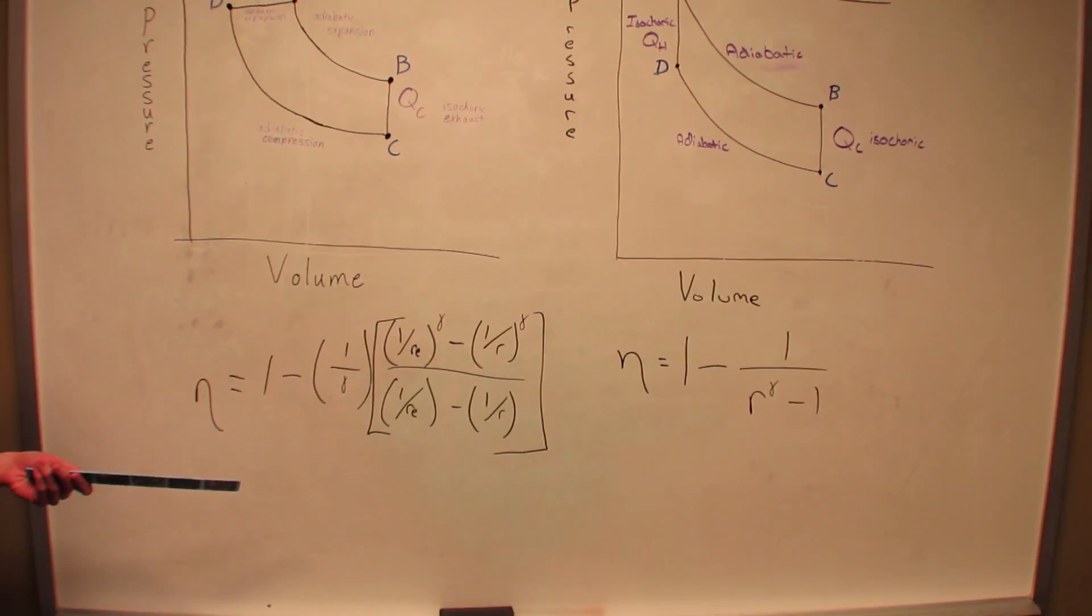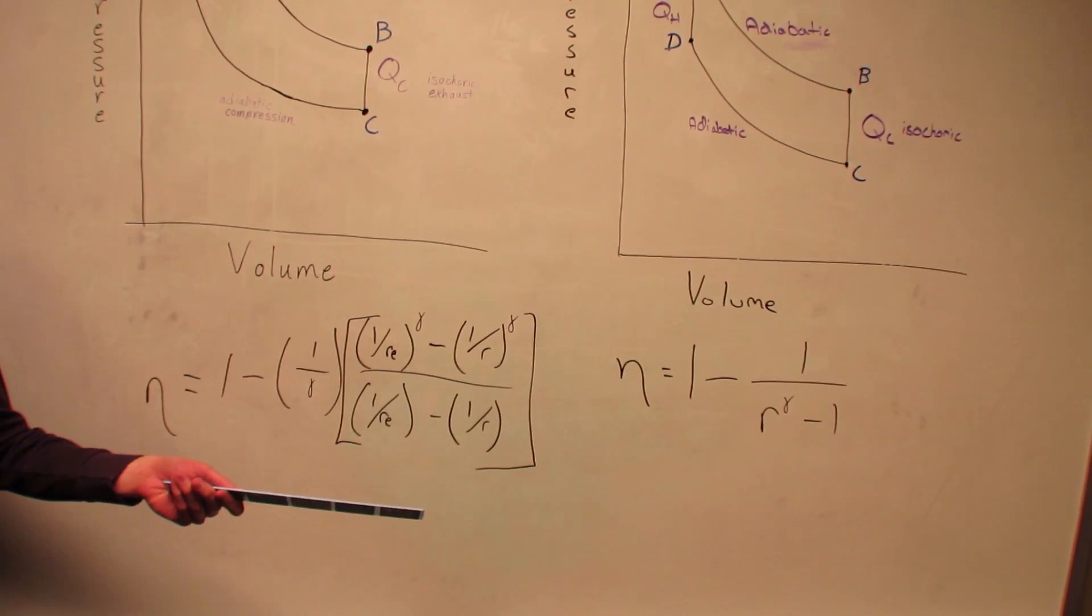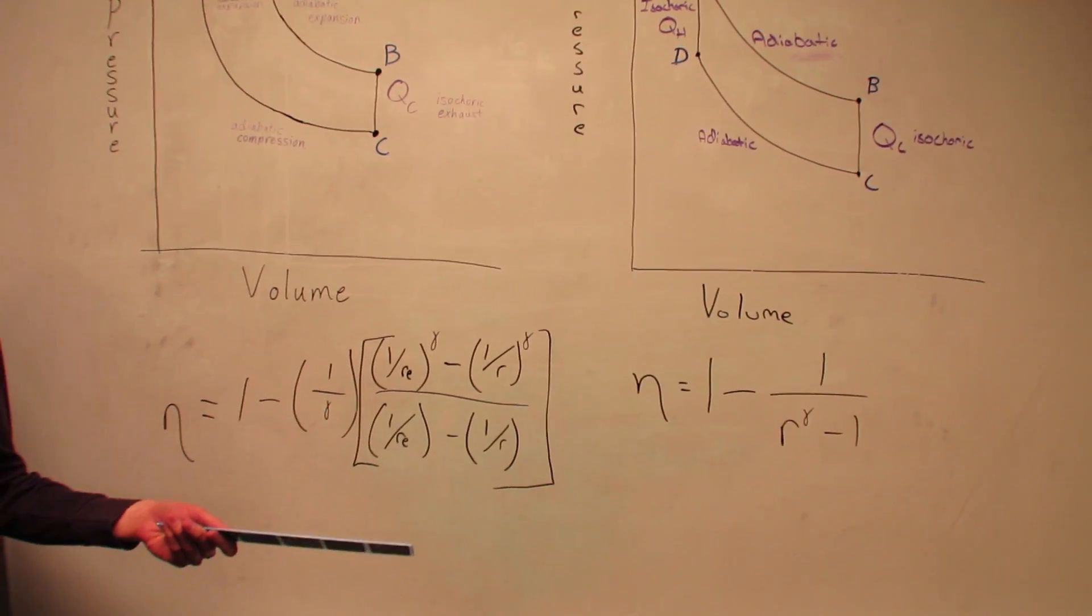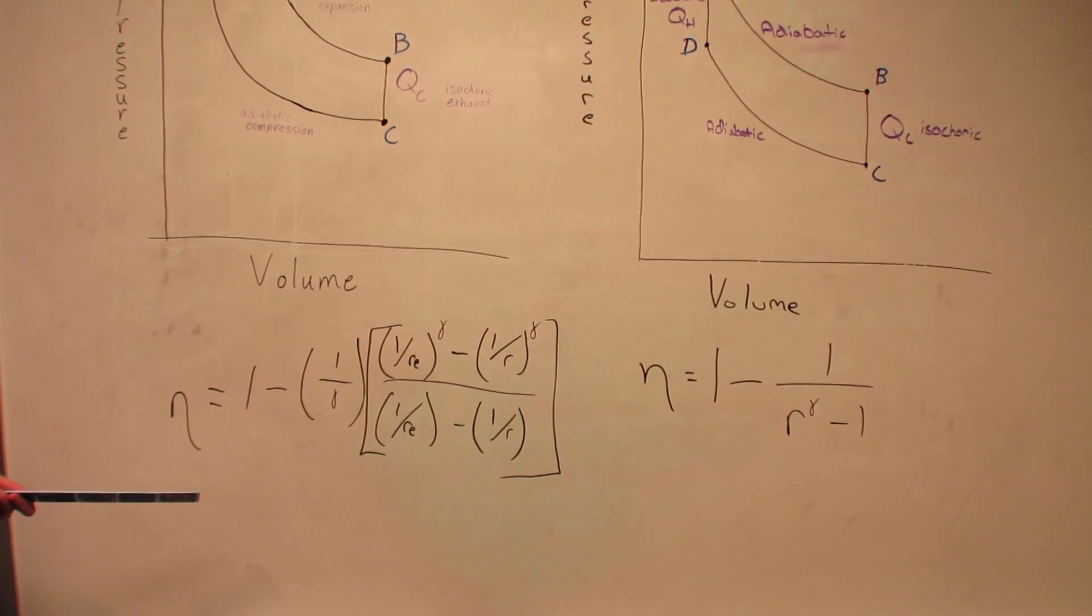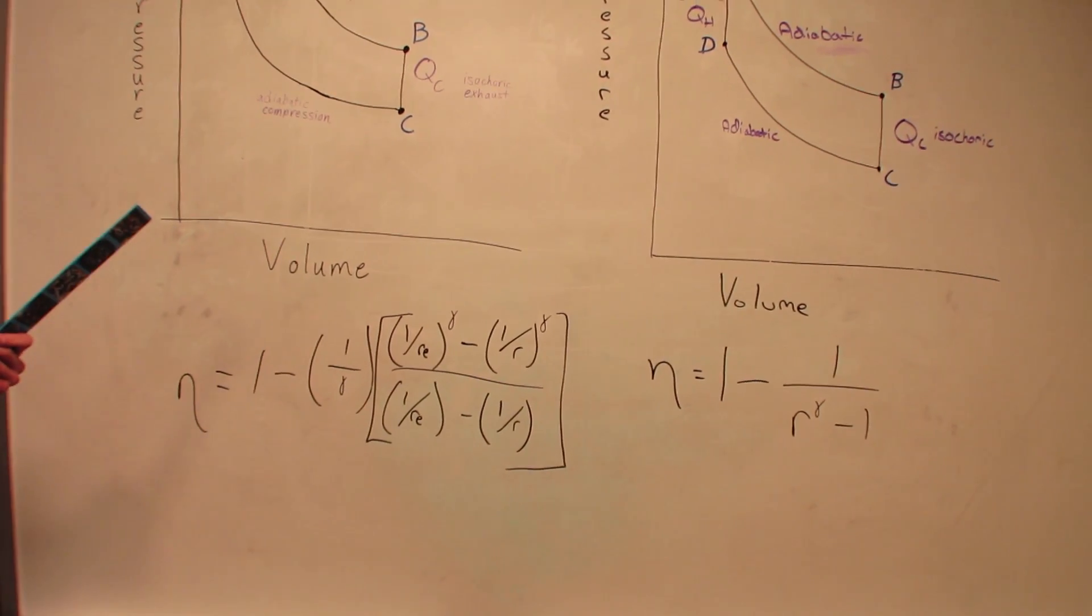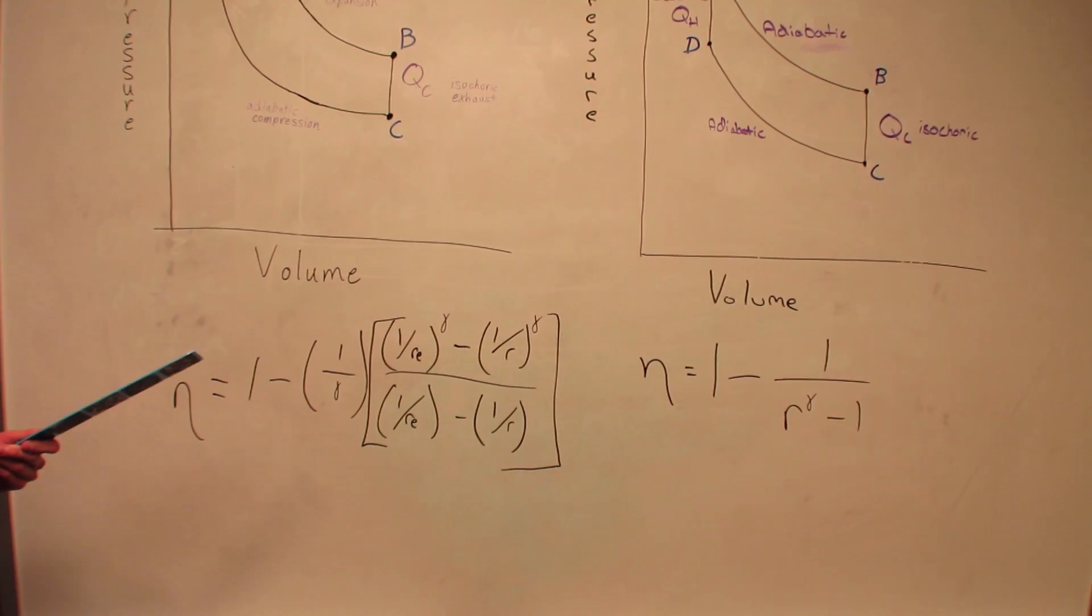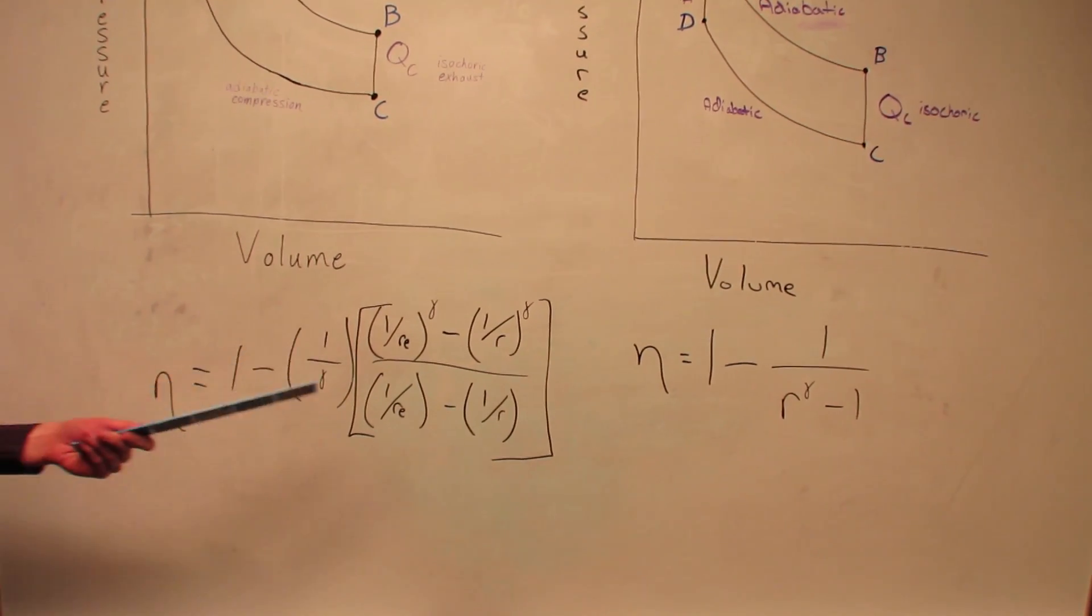Now the overall efficiency of both cycles can be represented with these two equations, which relate R, the compression ratio, to eta, which represents efficiency. Now the overall efficiency for the diesel cycle is greater because a diesel engine is capable of reaching a higher compression ratio, or a greater R.